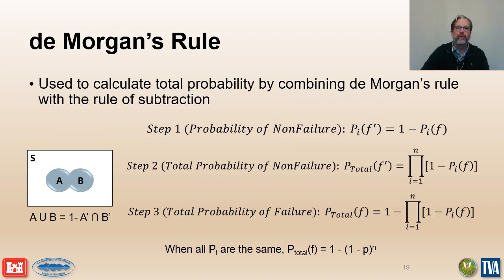De Morgan's rule provides us with a simpler way to perform these calculations in three steps. First, we calculate the probability of the non-failure event for each potential failure mode as one minus the probability of failure. Next, we calculate the total probability of the non-failure event by multiplying these probabilities together. The final step is to calculate the total probability of the failure event as one minus the total probability of the non-failure event.